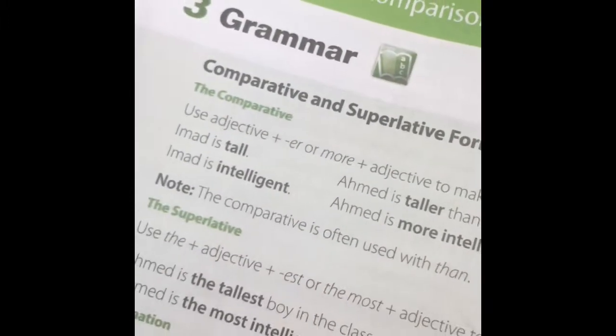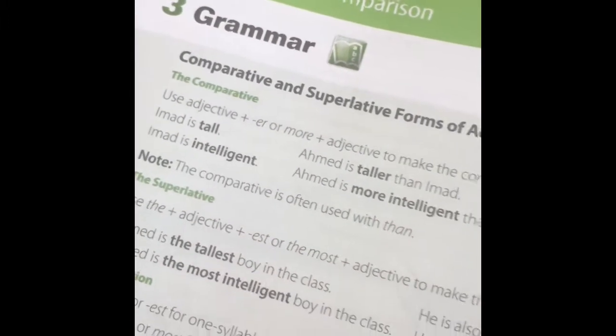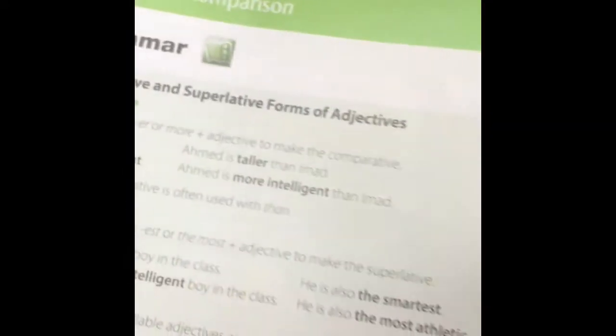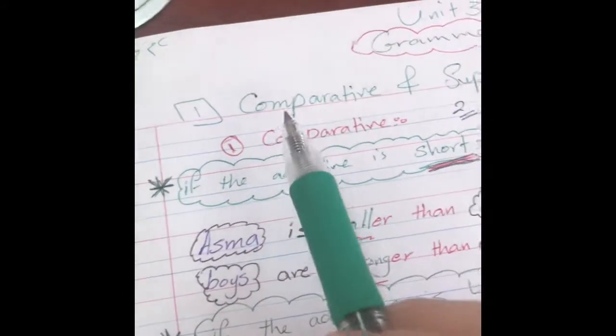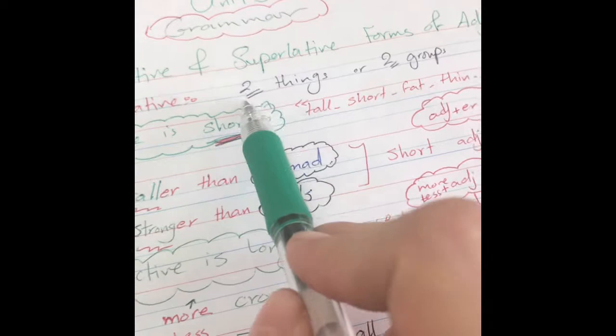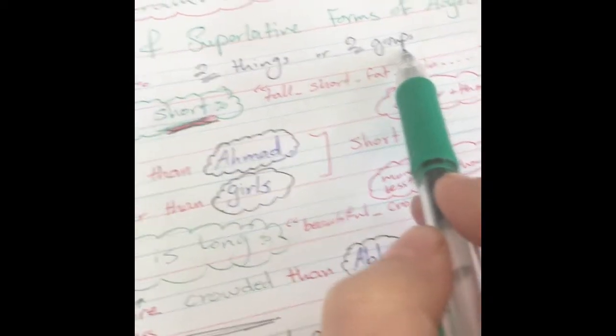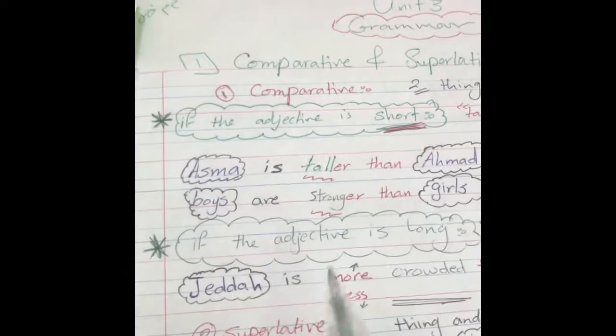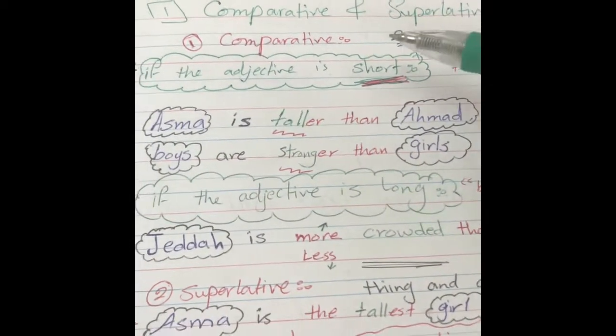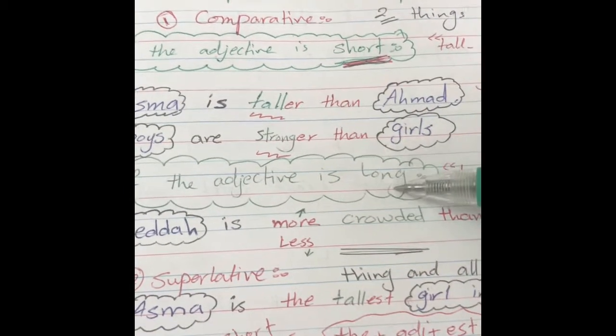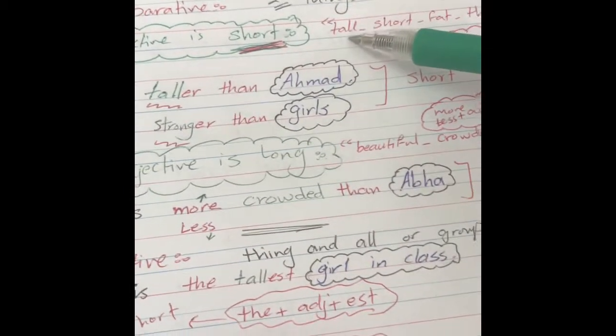Grammar of Unit 3. There is no comparison. Page 20, number one: comparative and superlative forms of adjectives. First of all, comparative. Comparative means we have two things or two groups of things that we are going to compare between. And we have two ways with the comparative and the short or long adjectives.